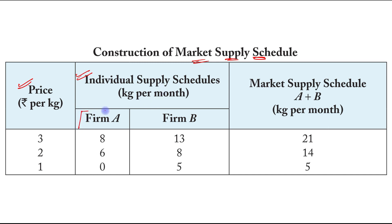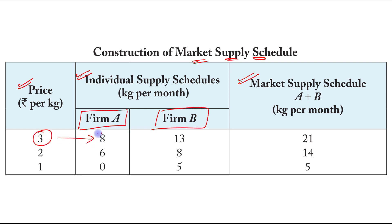We have two firms: Firm A and Firm B. The third column is the market supply schedule. At a price of rupees 3 per kg, Firm A is producing 8 kg per month.